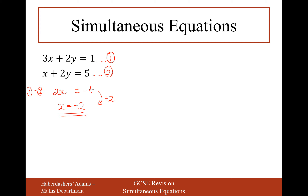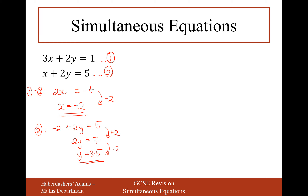We've eliminated the y variable — that's why this is sometimes called elimination. Divide both sides by 2, so x equals minus 2. Now substitute back into equation 2 — the easier one — replacing x with minus 2. We get minus 2 plus 2y equals 5, so 2y equals 7, divide by 2, and y equals 3.5. So x equals minus 2, y equals 3.5.